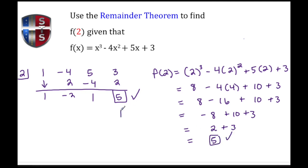And here I see that both of these come out to tell me that f(2) will give me an output value of 5. That sums it up for this video on the Remainder Theorem. Thank you for watching.